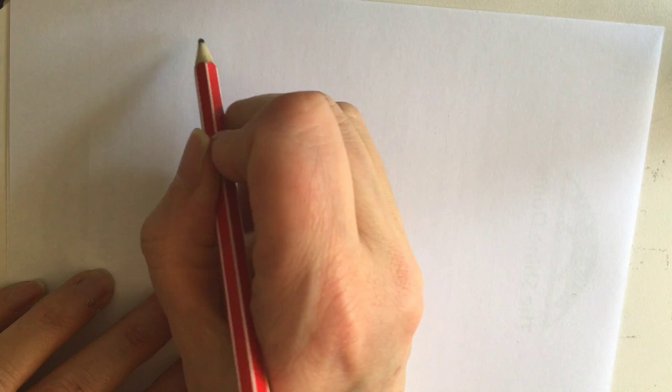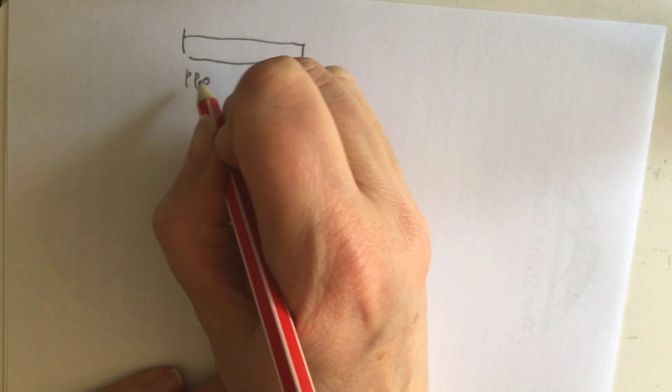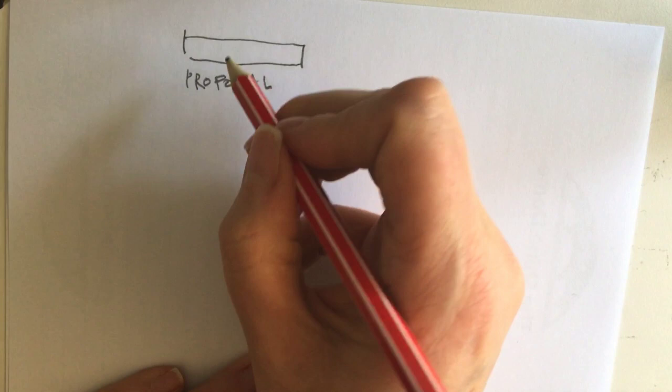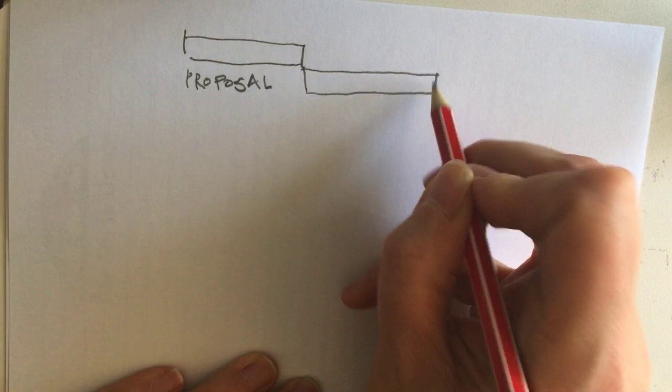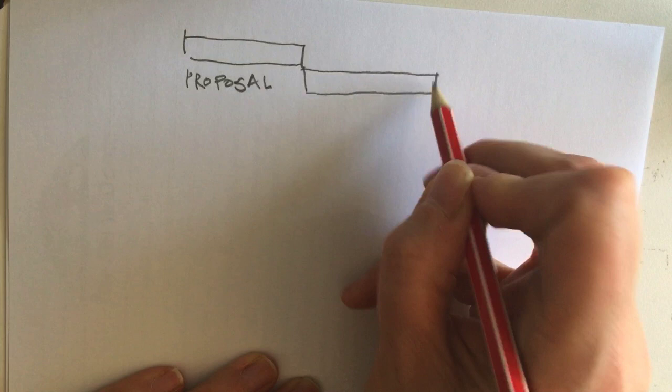Gantt charts are great and they give you a comforting illusion that you're in control of what's going on. So if I was to draw a Gantt chart of a book chapter, or let's say a whole book proposal to make it more complicated — what would it look like? We'd have probably some sort of three-month stage here, and I'll call that the proposal stage. This is where you've got an idea, you fill in the publisher's template, you get accepted, and at this point here you've got a signed contract.